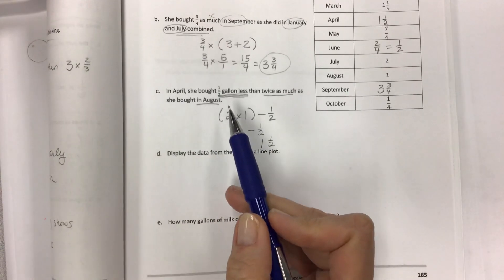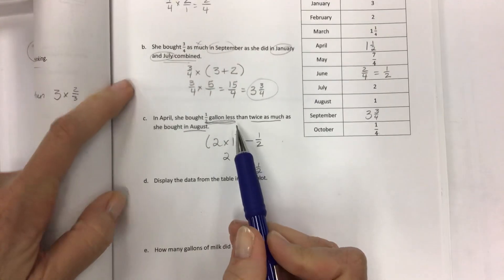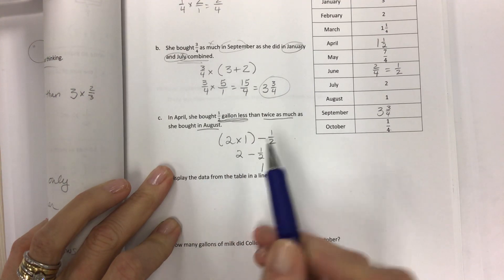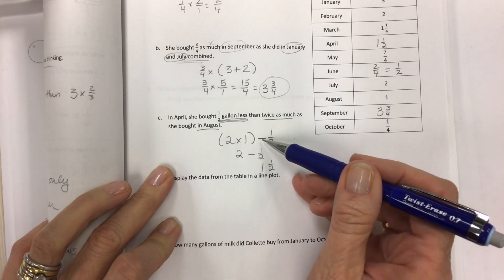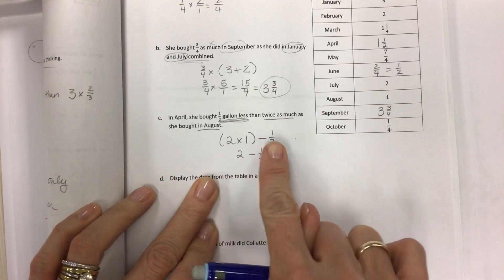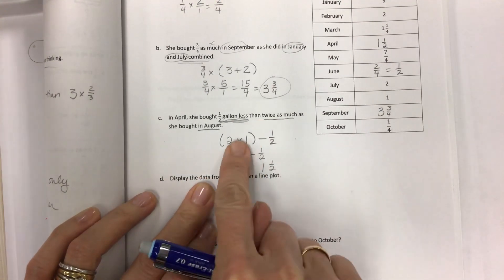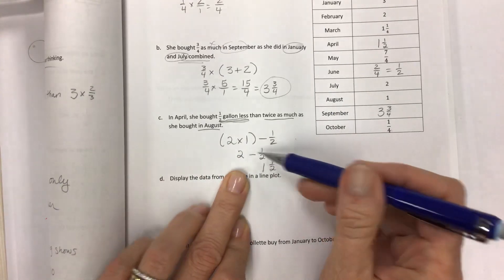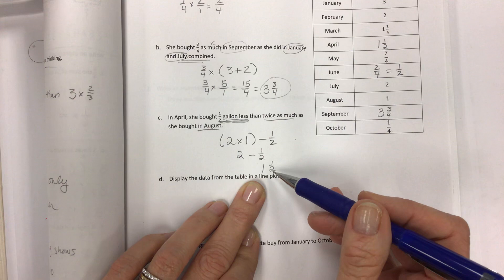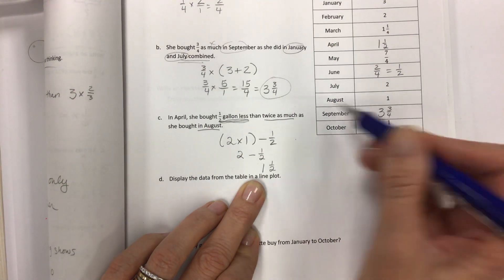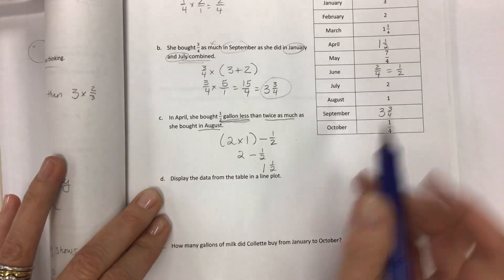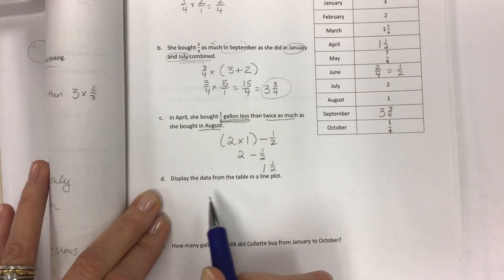In April she bought half gallon less than twice as much as she bought in August. Here's twice as much as August, and I was talking about having to put subtraction after because it's half gallon less than that. You have to take away the one half and you get one and a half, so put that in for April. I think I got cut off right around that point.